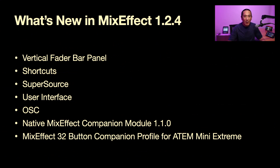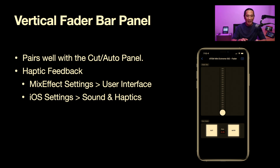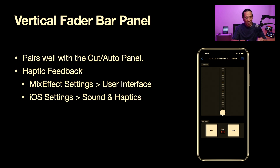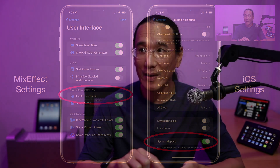So first thing we're going to talk about is the vertical fader bar. This is basically a vertical version of the horizontal fader bar. If you use an iPad, you see that you have a vertical fader bar when you're in landscape mode. But this is actually useful if you have an iPhone or an iPod Touch — you can simplify the switcher interface so that you just have the cut and auto button and the fader bar. And if you have haptic feedback turned on on your iPhone, you can actually feel it when you move the fader bar.